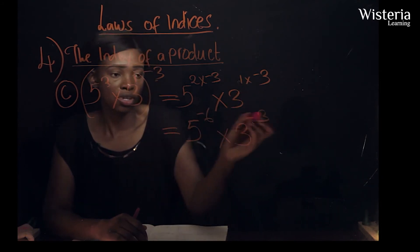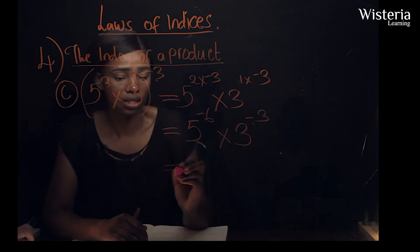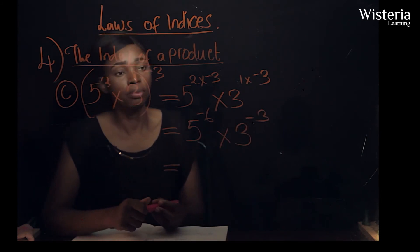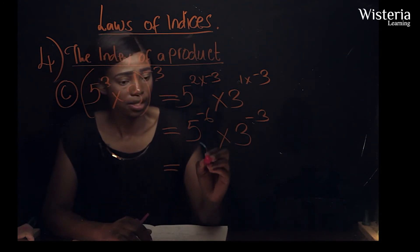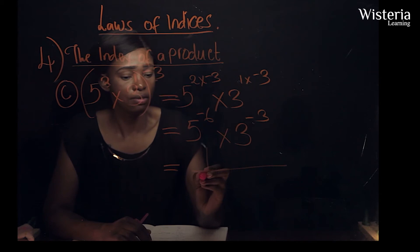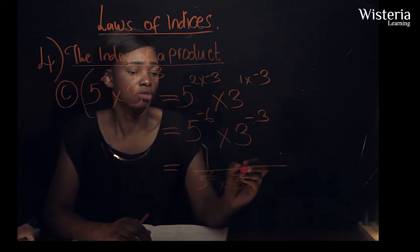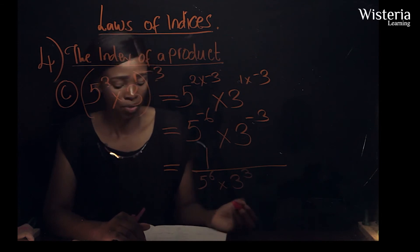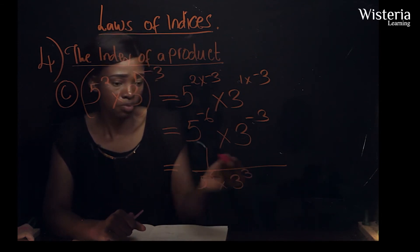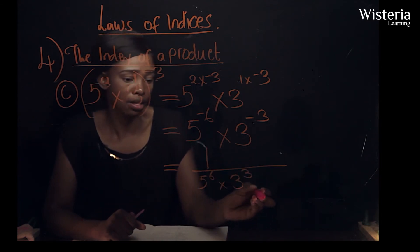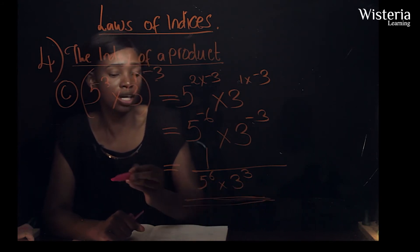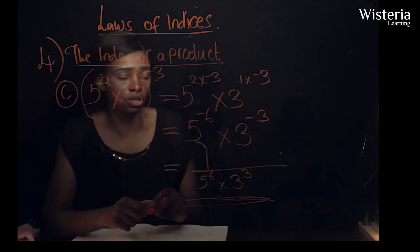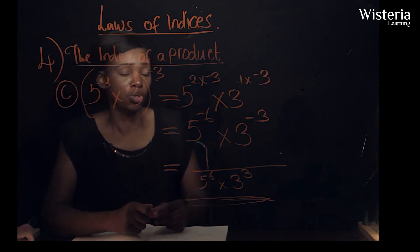This gives us five to the power negative six times three to the power negative three. Remember we're not finding a final numerical answer here — we're just seeing how we can apply these laws of indices.